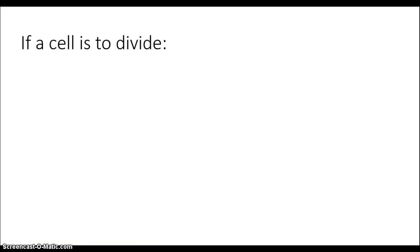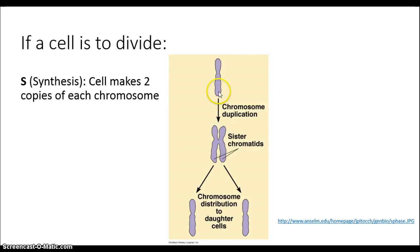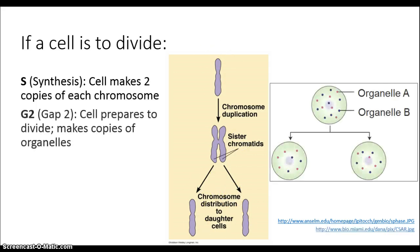If a cell is to divide, what it needs to do is in the S phase copy its chromosome to make two identical chromosomes in this X shape, stuck together, so that these two copies when they're separated give you the original chromosome in each of the two new cells that are created. And in G2 phase, the gap 2 phase, it copies its various organelles so that they can be split between the two daughter cells, giving them an equal complement.